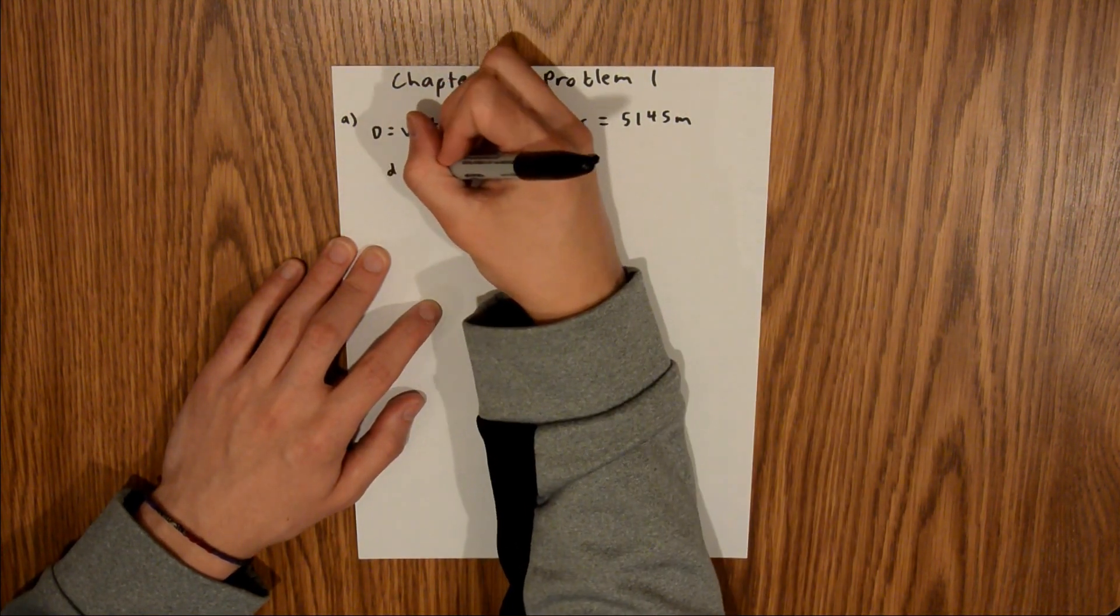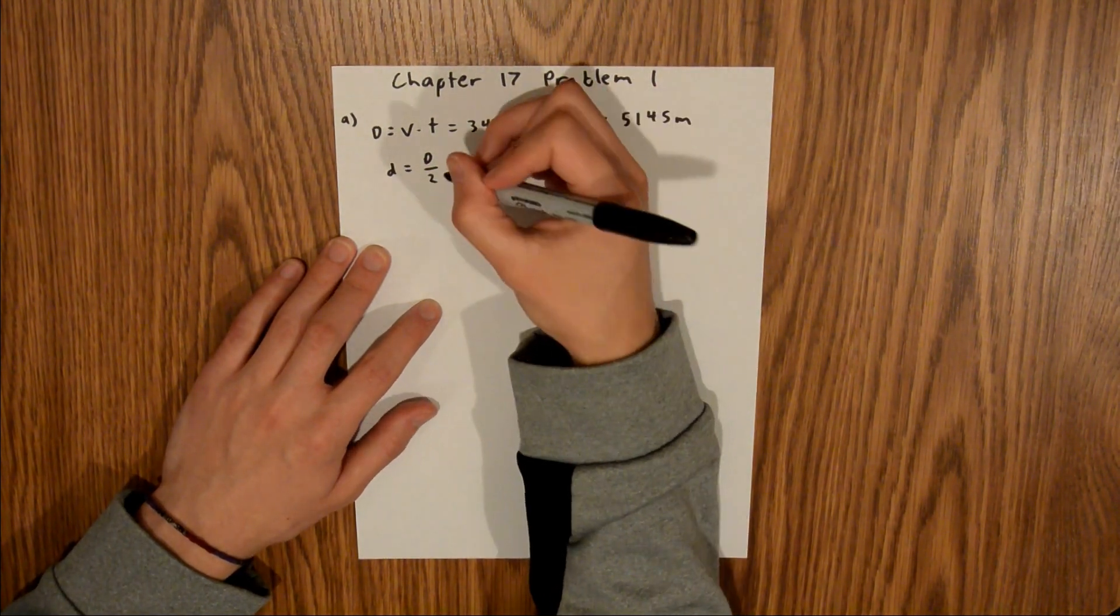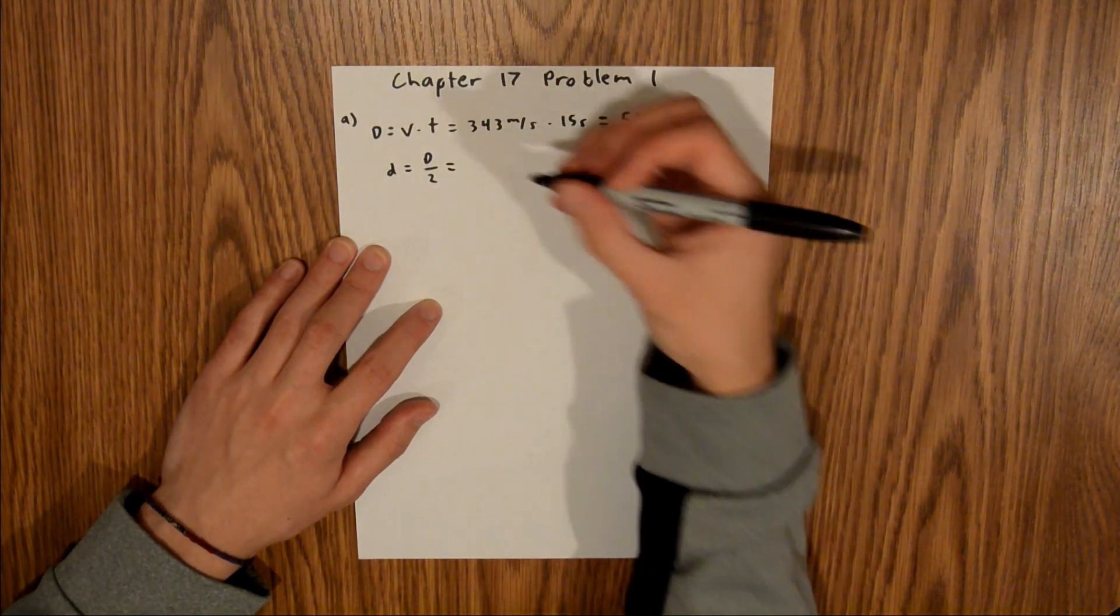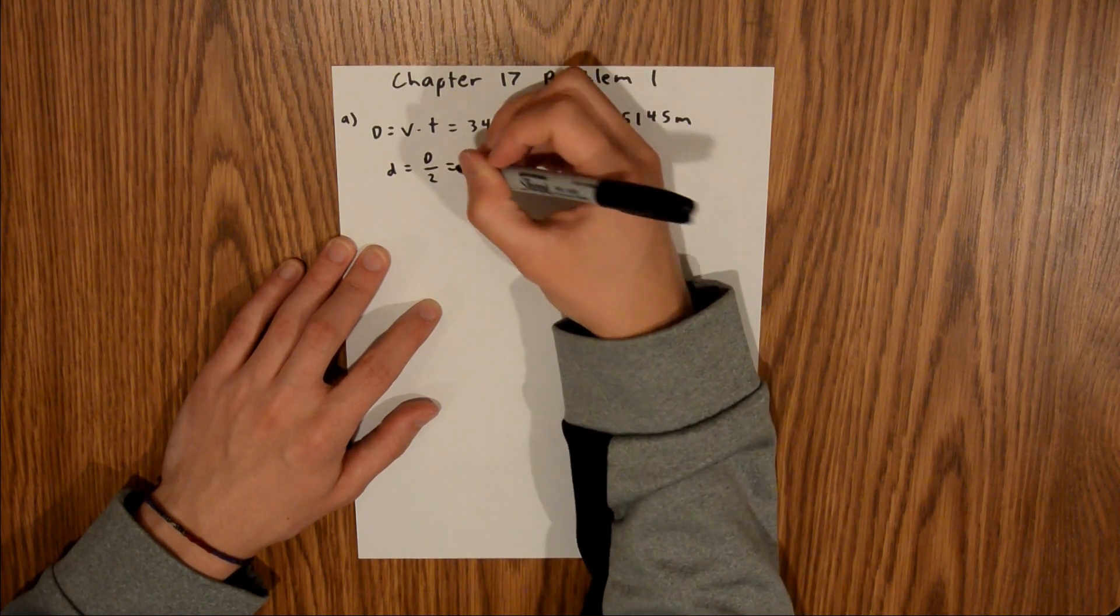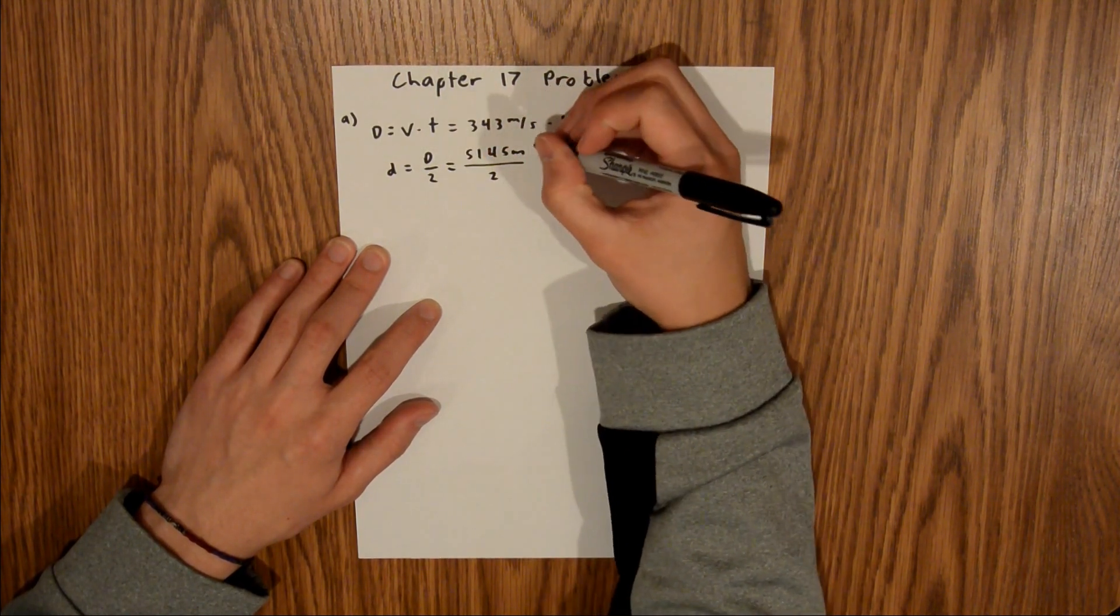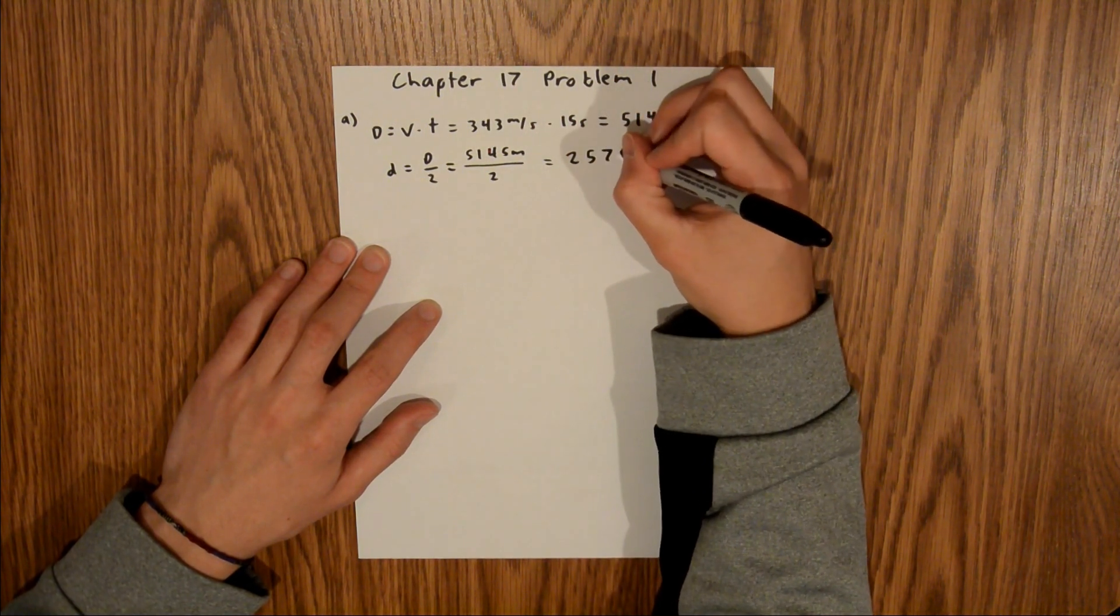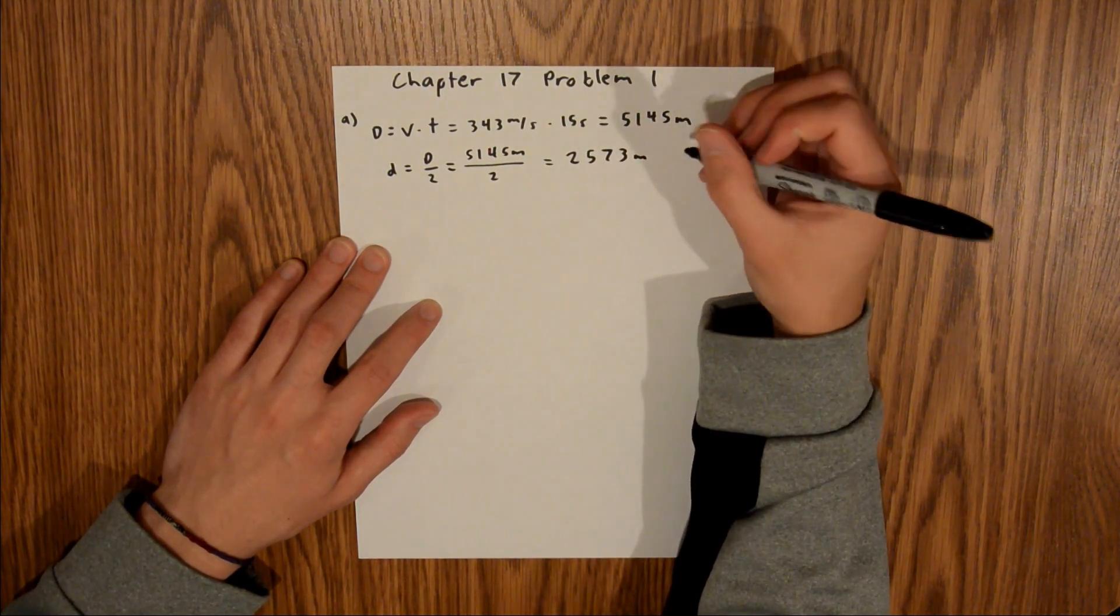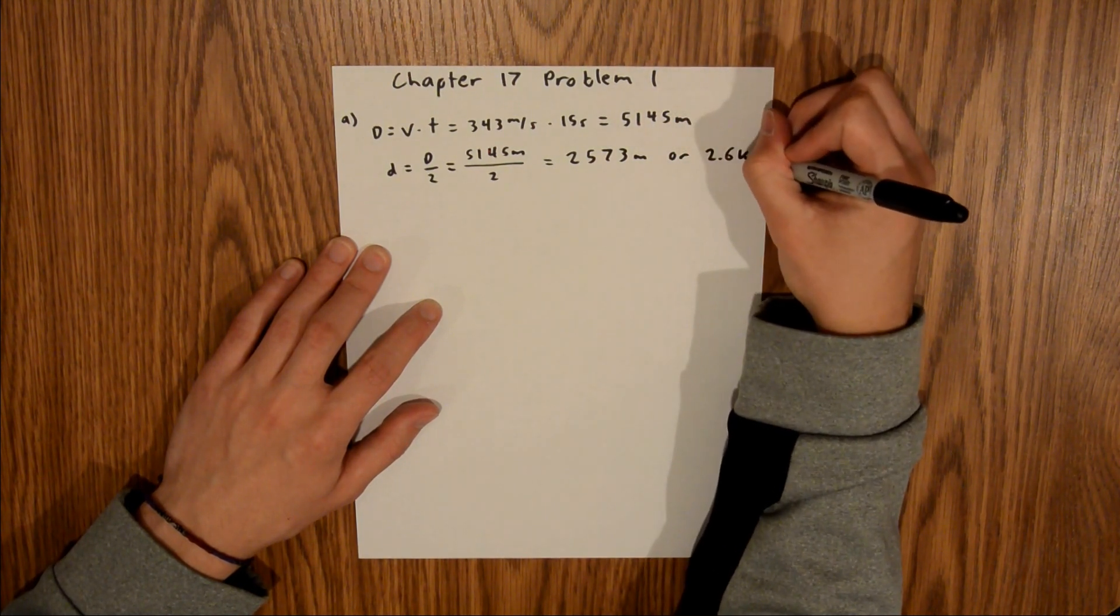The distance we are looking for equals total distance over 2. We just found our total distance, so that equals 5,145 meters divided by 2, which equals 2,573 meters, or roughly 2.6 kilometers.